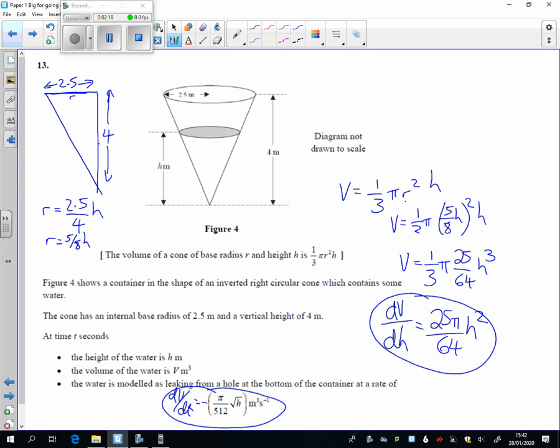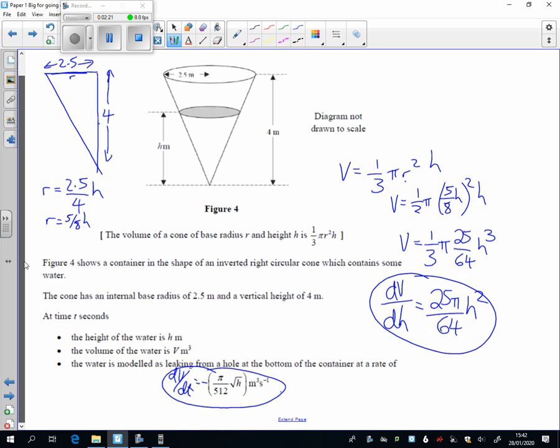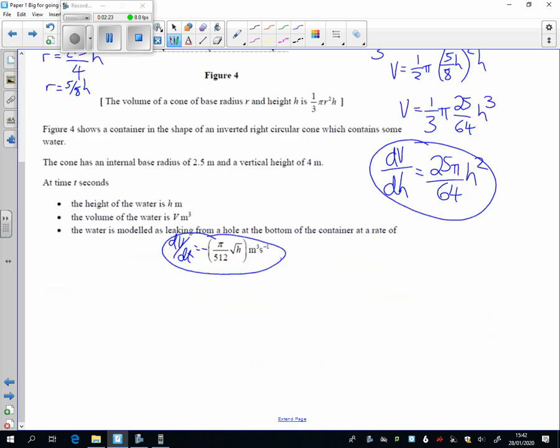We're going to combine this with this. Let's make some space. We're trying to find out what dh/dt is. dh/dt is dh/dV times dV/dt. dh/dV is this thing upside down. Let's be careful: we've got 64 on the top and we've got 25 pi h squared on the bottom.